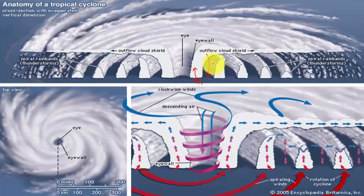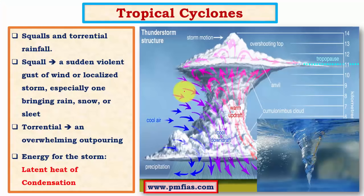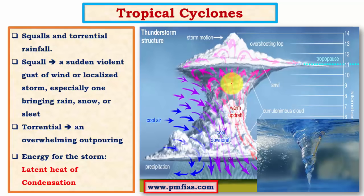There are different regions where subsidence occurs: at the external ends, in the eye region internally, and in between the spiral bands. Spiral bands are cumulonimbus clouds, smaller in scale compared to the eyewall cloud. Tropical cyclones are essentially thunderstorms on a very large scale, but in tropical cyclones the thunderstorms are spiraling inwards towards a low pressure center.